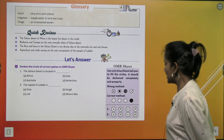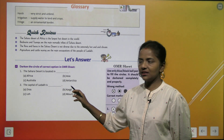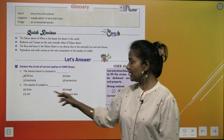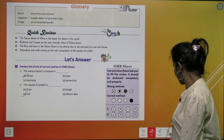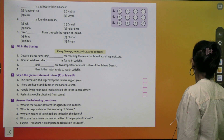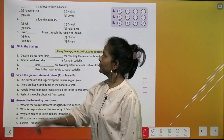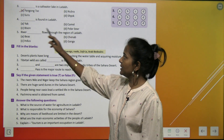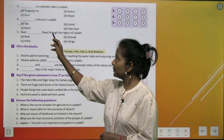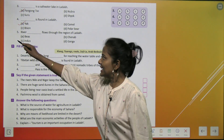The Sahara desert is located in Africa. The capital of Ladakh is Leh. Pangong So is a salt water lake in Ladakh. Yak is found in Ladakh. The river Indus flows through the region of Ladakh. Fill in the blanks: desert plants have long roots for reaching the water table and acquiring moisture. The Tibetan wild ass called Kiang is found in Ladakh. The Tuareg and the Arab Bedouins are two important nomadic tribes of the Sahara desert. The Zojila pass is the major route to reach Ladakh.